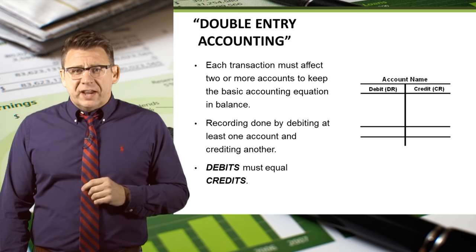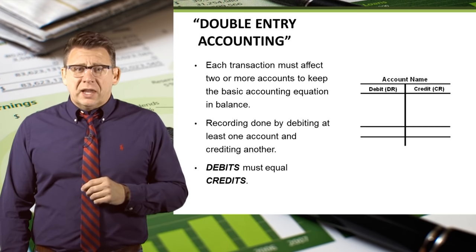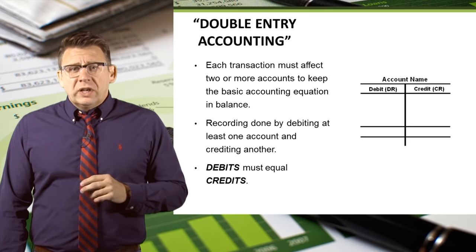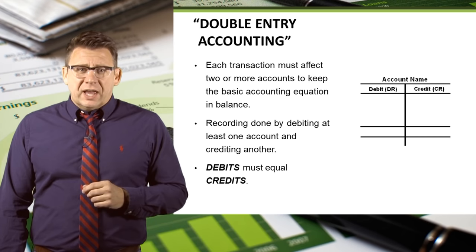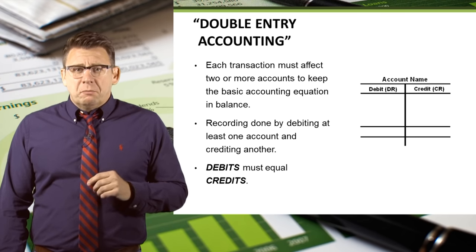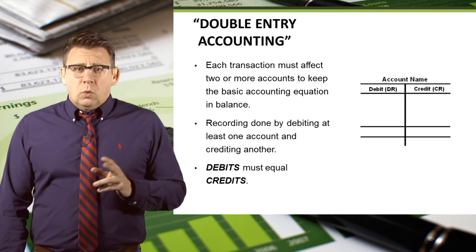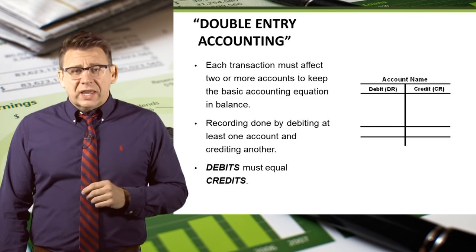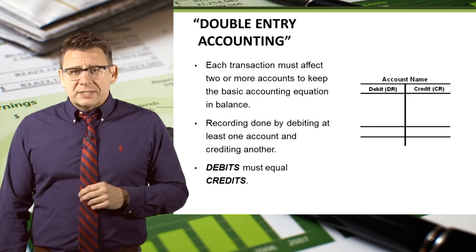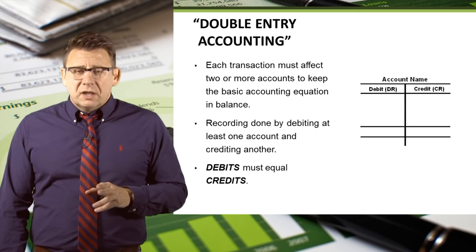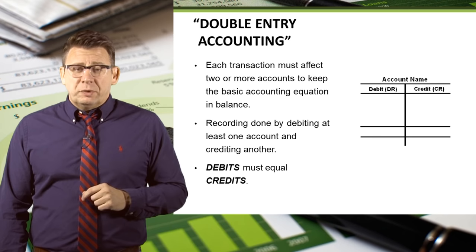Each transaction must affect two or more accounts to keep the accounting equation in balance. This is known as double entry accounting. So every transaction must include at least two accounts — one account that is debited and one account that is credited. There can be more than two accounts, but there can never be less. And debits must always equal credits, or the accounting equation would be out of balance.